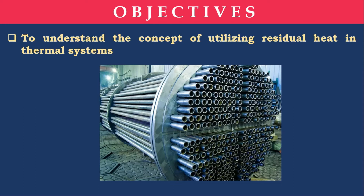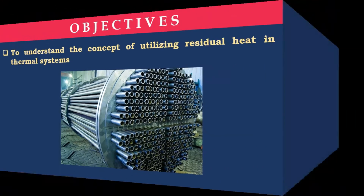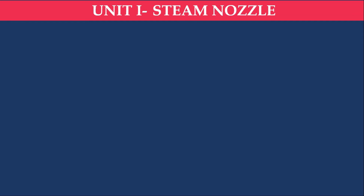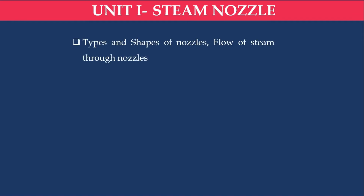These two are the objectives of this subject. Now we will move on to the syllabus. The first unit is Steam Nozzle. A nozzle is a device used to convert pressure energy into kinetic energy. It has a varying cross-sectional area. In this unit, we will see types of nozzle and the shape of nozzle.